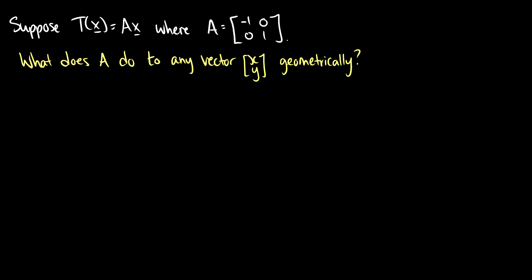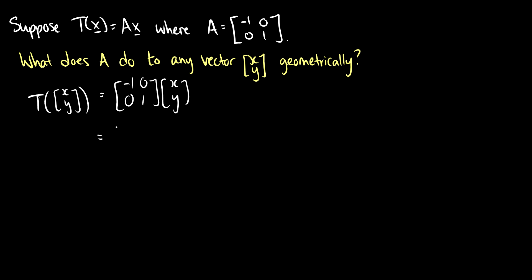Here's what transformations are for geometrically. Suppose T(x) = Ax where A is the matrix [-1, 0; 0, 1]. What does A do to the vector [x, y]? Plugging in, T([x, y]) = [-1, 0; 0, 1] times [x, y] = x*[-1, 0] + y*[0, 1].